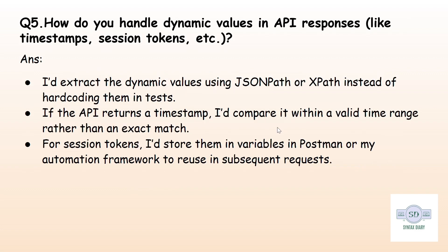The next question is: how to handle dynamic values in API responses? Sometimes APIs return values that change every time, like timestamps, session IDs, or tokens. To handle them, first, instead of checking exact values, compare them within a valid time range. Second, use JSONPath expressions to extract values dynamically instead of hardcoding them. Third, store values as variables and use them in later requests.